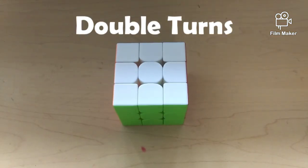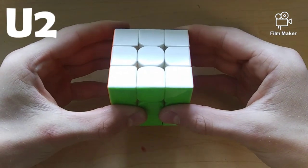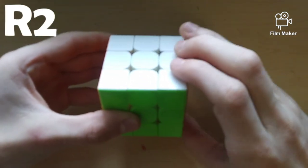And then, of course, we have double turns, which is just the letter with the 2 after it. So, here's U2. Here's R2.